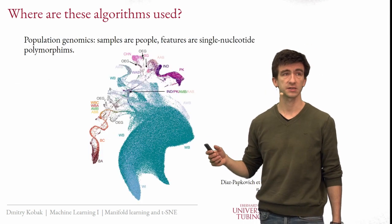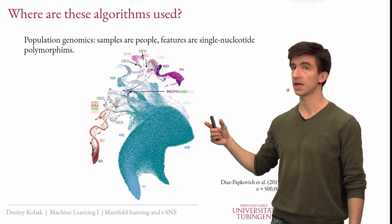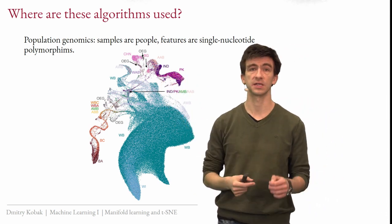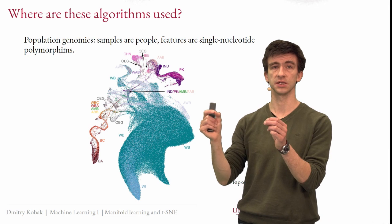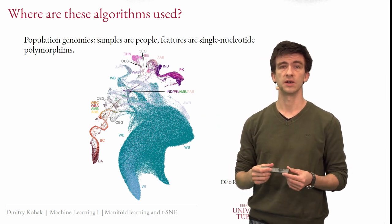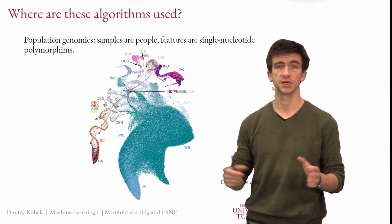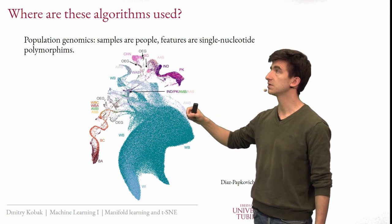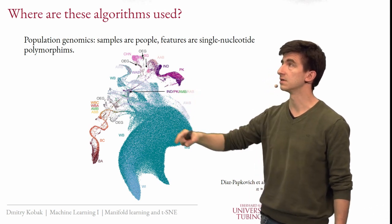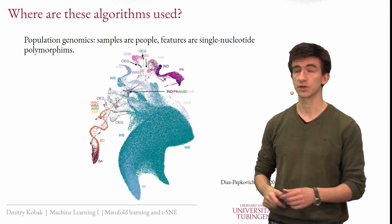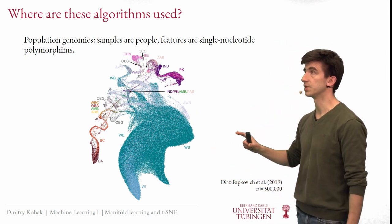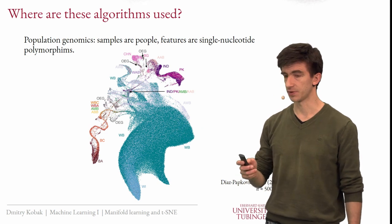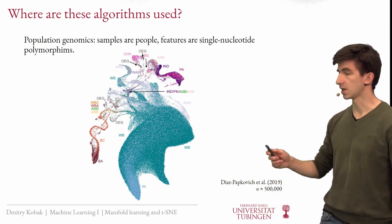Another example is population genetics, where samples are people and features are SNPs — single nucleotide polymorphisms — telling you which positions in the genome your genetic code differs from the average human genome. Every point in this visualization is a person, colored here by ethnic origin of people from the UK. This is something like half a million people depicted, and one can see a lot of very meaningful structure in this plot.